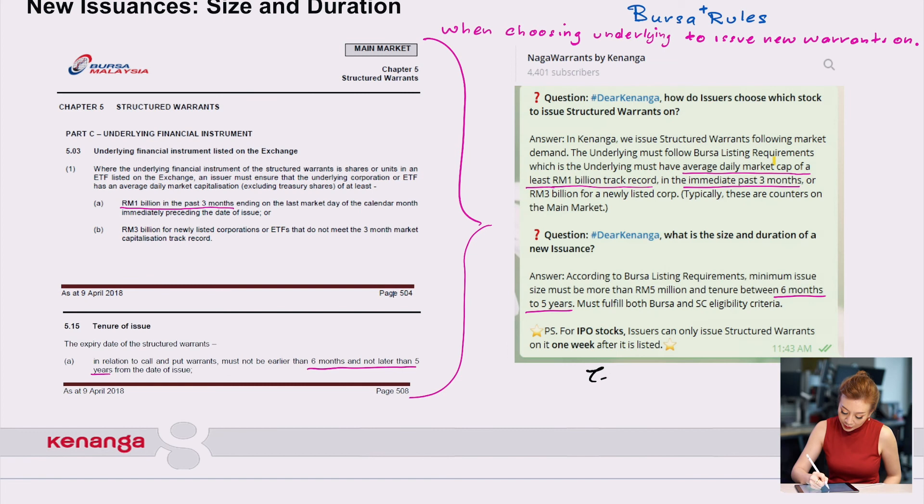It is because of Bursa's regulation. There is a very strict rule that we follow, which we've summarized on our telegram. We need to follow Bursa's listing requirements, where the underlying must have an average daily market cap of at least one billion in the past three months. So once it breaks that market cap of one billion, it has to stay there every single day for three months before issuers can issue warrants on it.